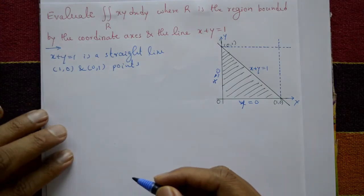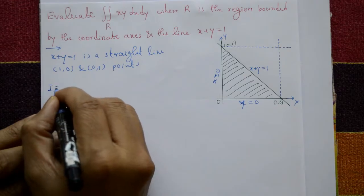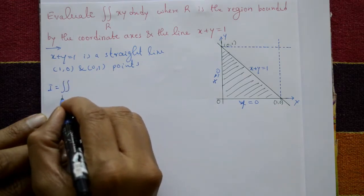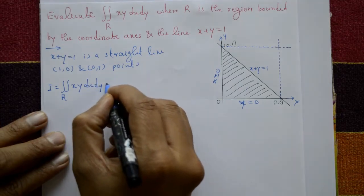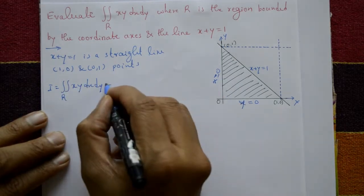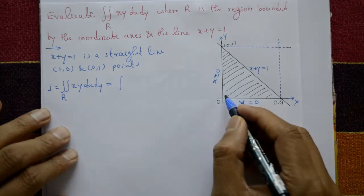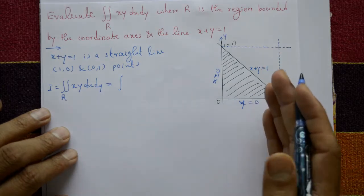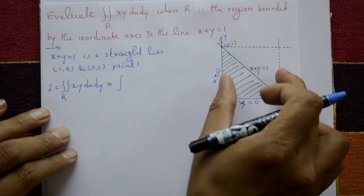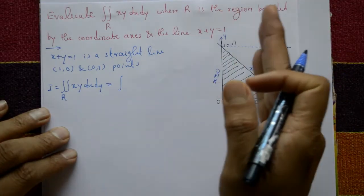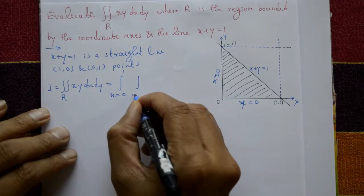From the figure, take I equal to the double integral over R of xy dx dy. Now set the limits. First consider x values: x goes left to right, from 0 to 1.